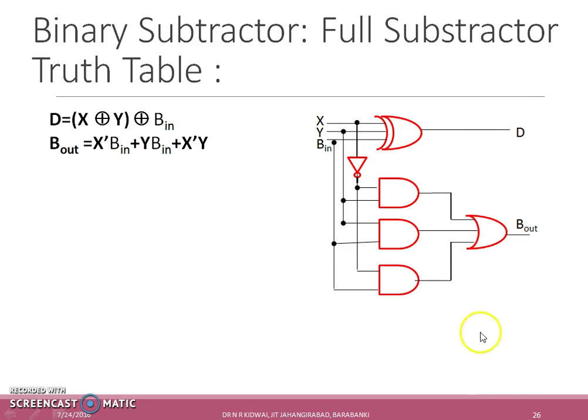By observing the circuit, it is similar to the full adder with only one change: an inverter is added in X for computing borrow output. While in full adder case, there was no inverter and the circuit output was carry.